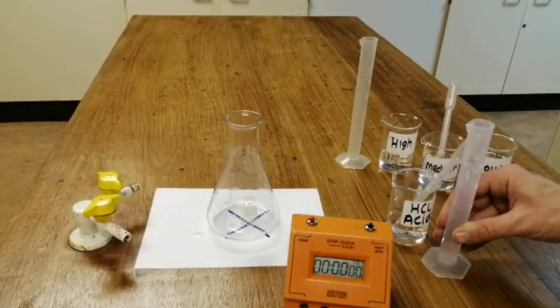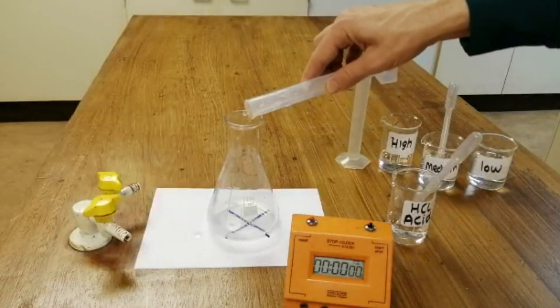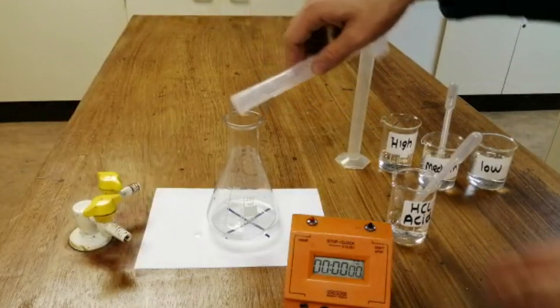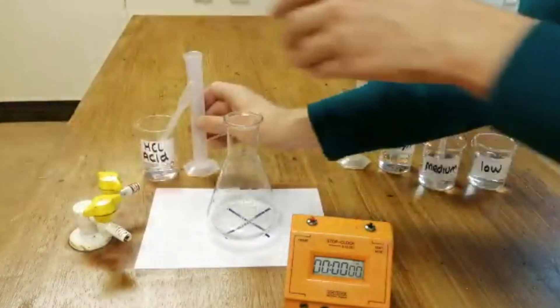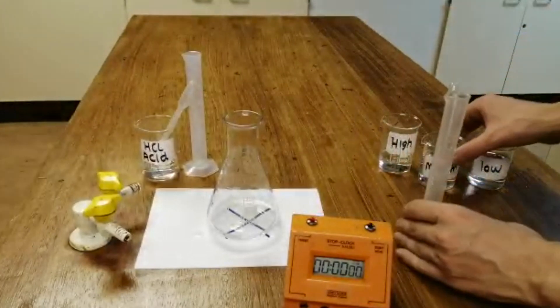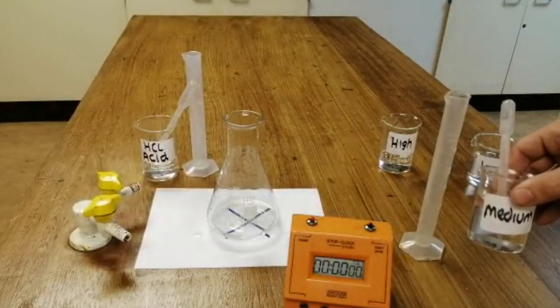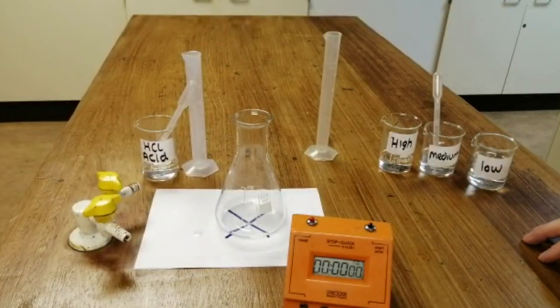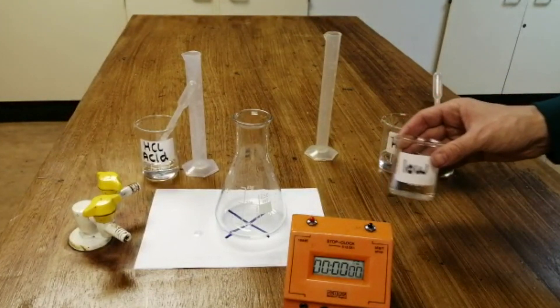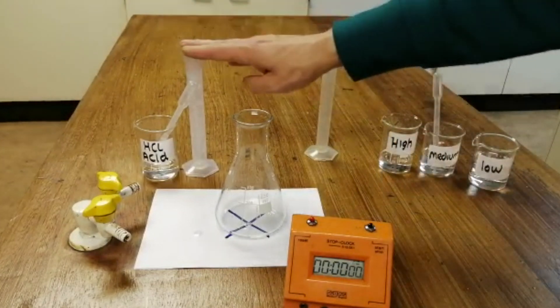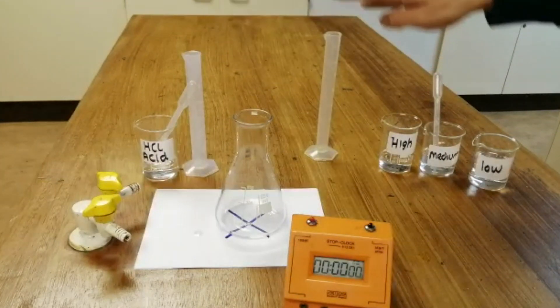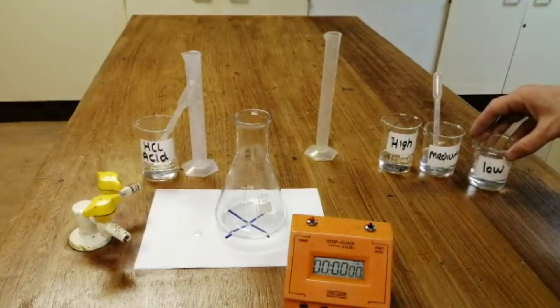I shall now repeat the experiment, adding 25 centimetres cubed of acid to 25 centimetres cubed of the medium concentration. Finally, I will repeat the experiment using the low concentration of sodium thiosulfate by adding another 25 centimetres cubed of acid to 25 centimetres cubed of the low concentration.